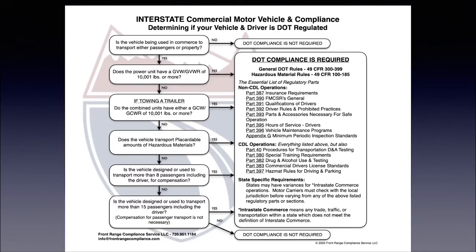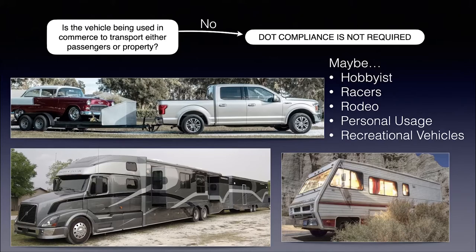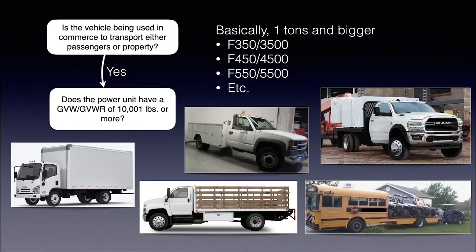Here at Front Range Compliance Services I like to make flow charts to help clients clarify compliance questions. This is the newly redesigned 'What is a Commercial Motor Vehicle' flow chart. Question one at the top: is the vehicle being used in commerce to transport passengers or property? If you answer no, no DOT compliance is required — that covers hobbyists, racers, rodeoers, personal use, or recreational vehicles, though there are some caveats for business use. If you answer yes, you proceed to the next question.